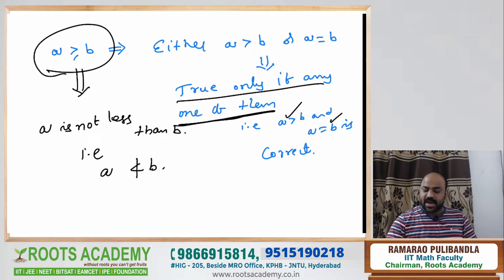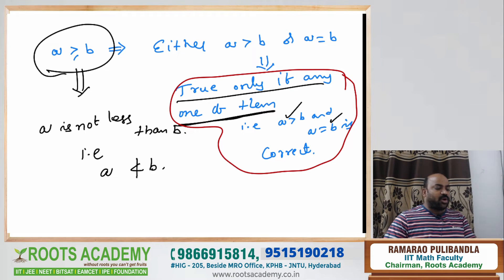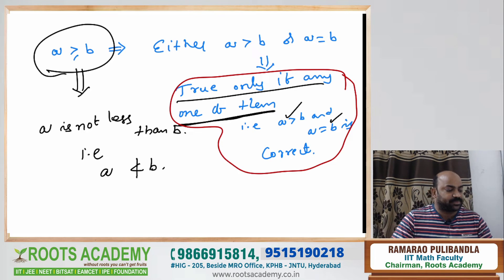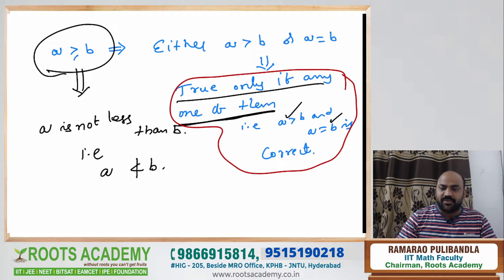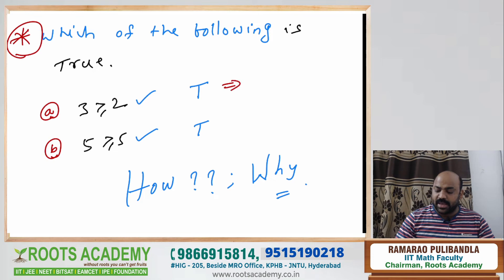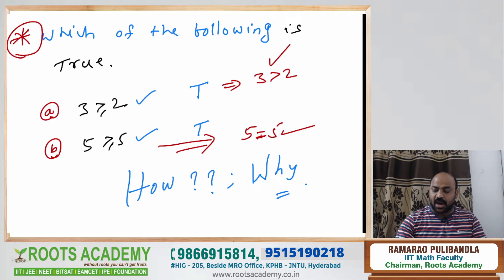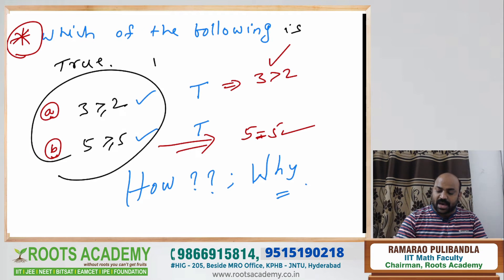You should understand this before you go to answer that. Have you got the correct answer for this? Can you look at your question now — what does it say? Any one of them should be true. Yes — 3 is greater than 2, this is true. Or any one of them should be true — 5 is equal to 5, this is true. That's why these two are both true.